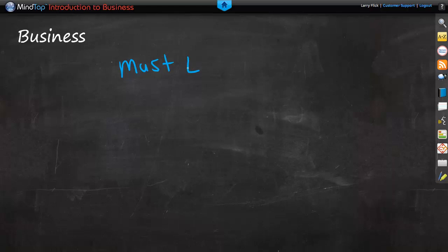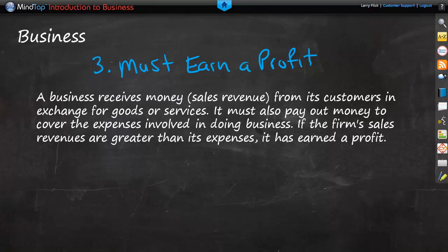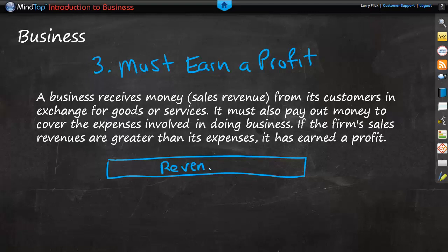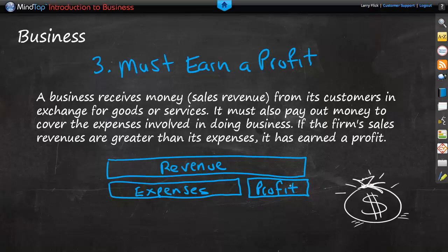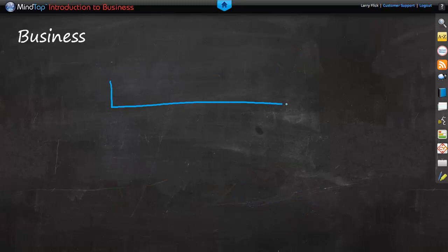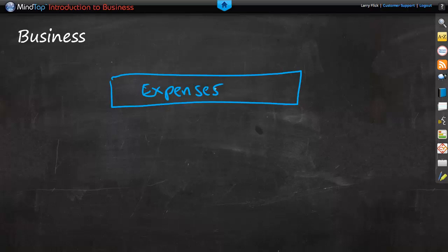Now the third activity is that a business must earn a profit. A business receives money from its customers in exchange for goods or services. It must also pay out money to cover the expenses involved in doing business. If the firm's sales revenues are greater than its expenses, it has earned a profit. However, if expenses exceed revenues, that creates a loss.